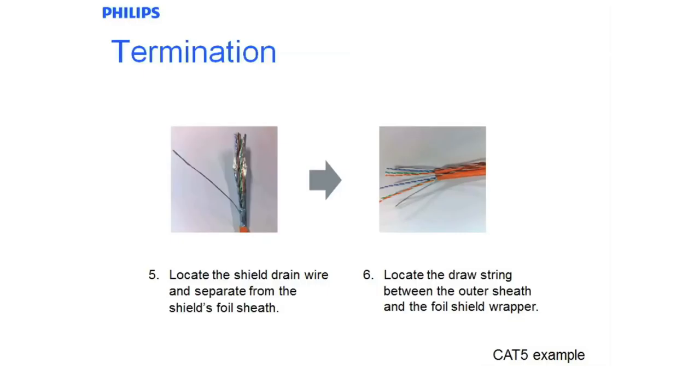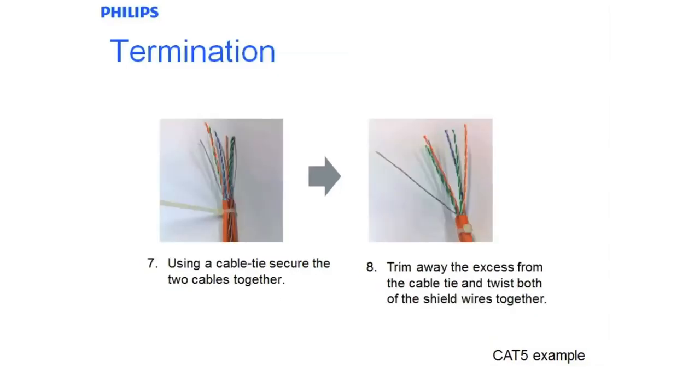Once you locate that on both of the cables, this is assuming that you have two cables incoming and outgoing for the daisy chain configuration of the device you were fitting off. Wrap your two shields together. Use a cable tie to secure the two cables together or use some insulation tape. Twist our shields together.